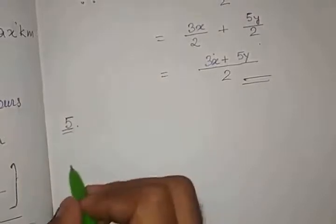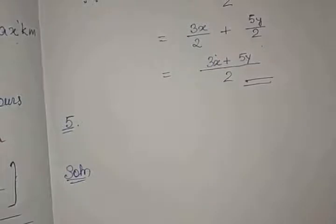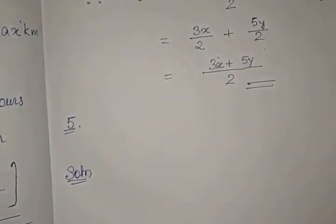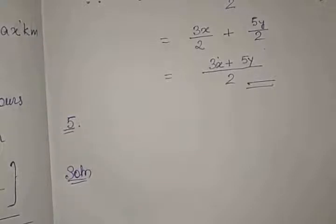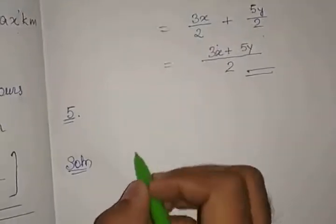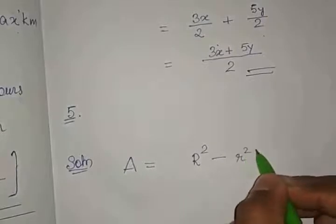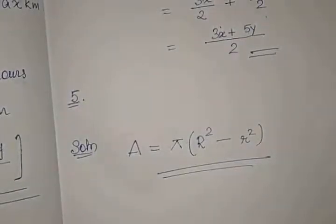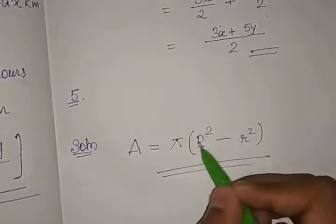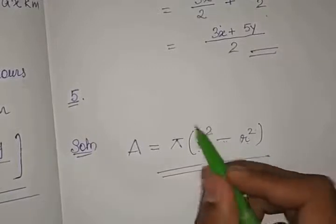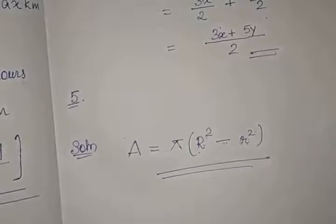Question Number 5: The area of a circular ring is pi times the difference between the squares of the outer radius and the inner radius. The area is A. So the formula is: A = π(R² − r²), where R is the outer radius and r is the inner radius.